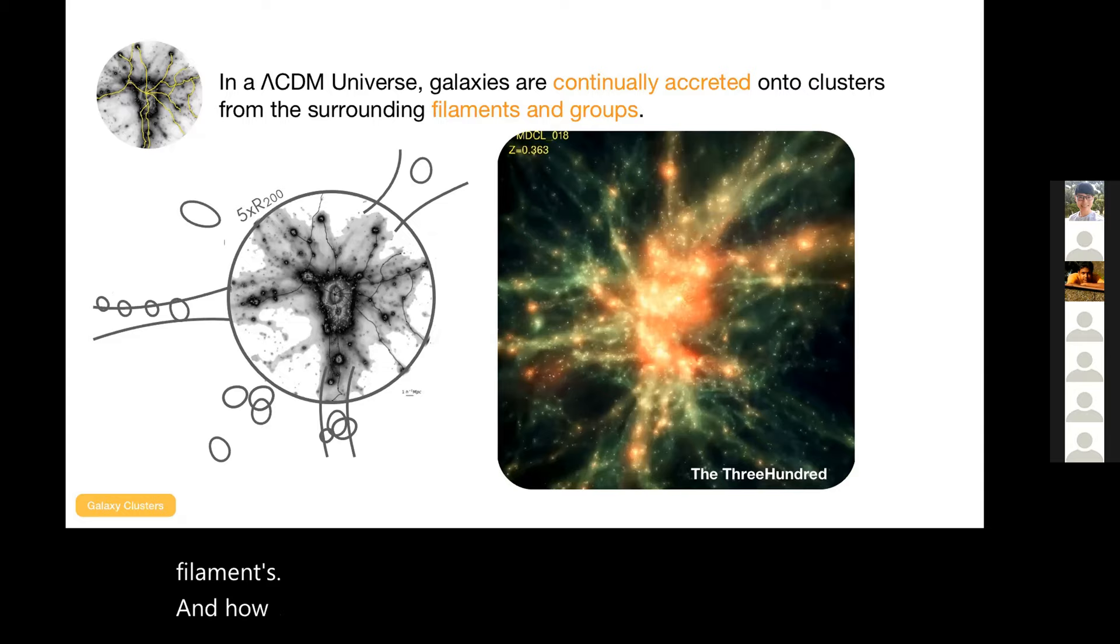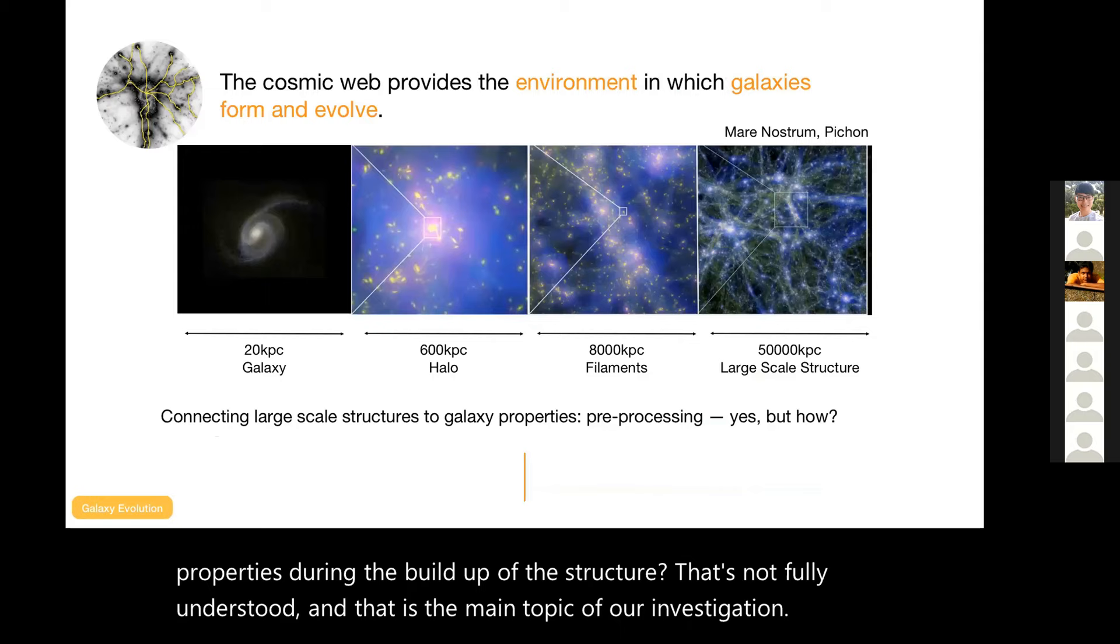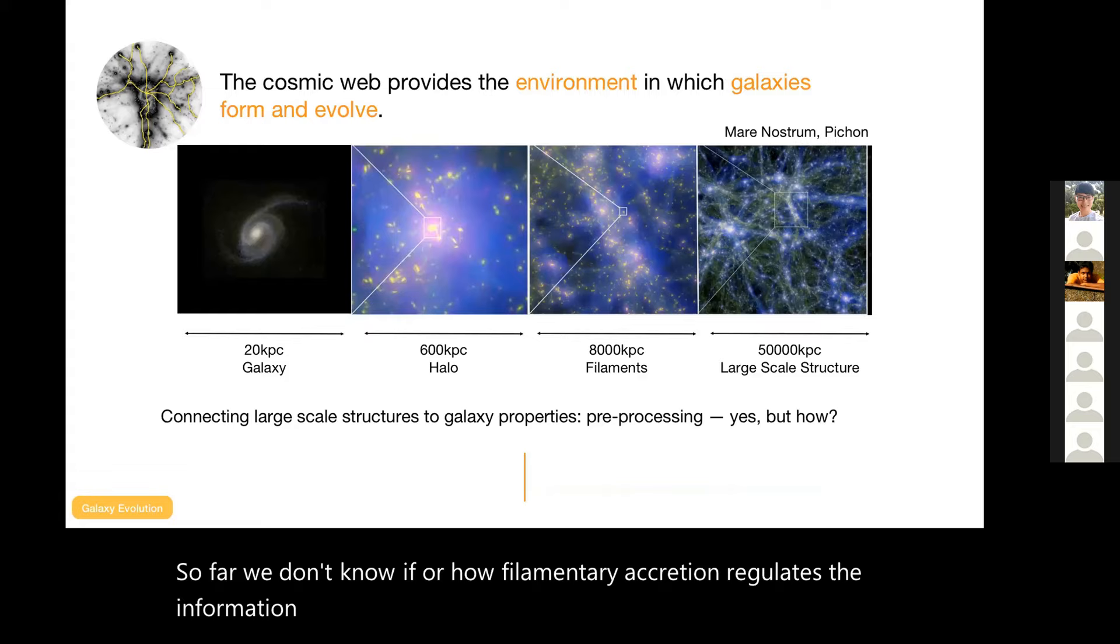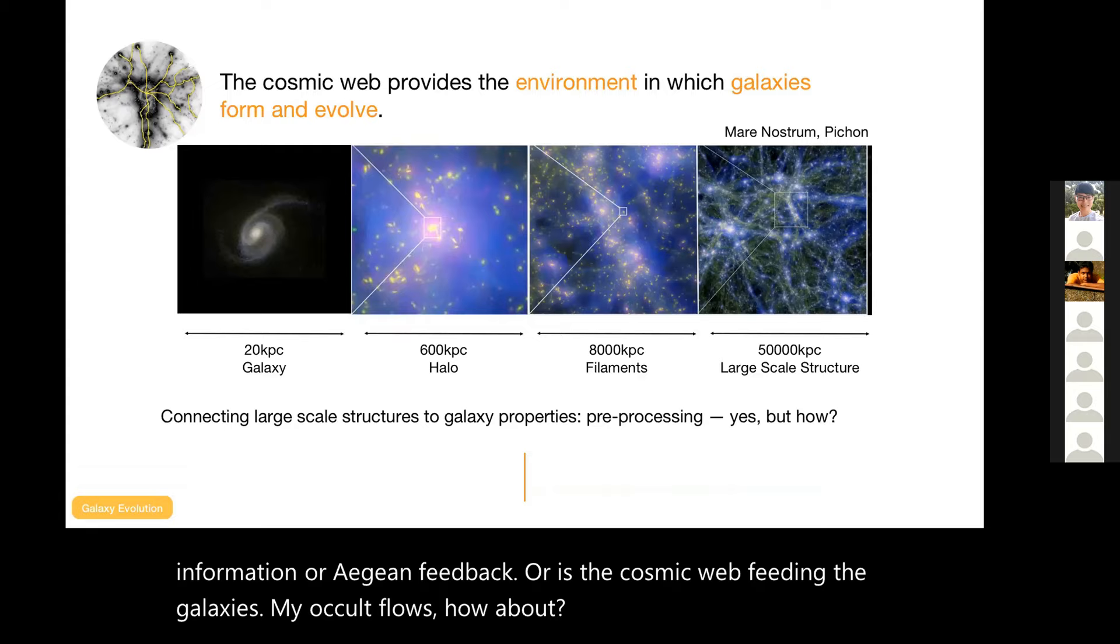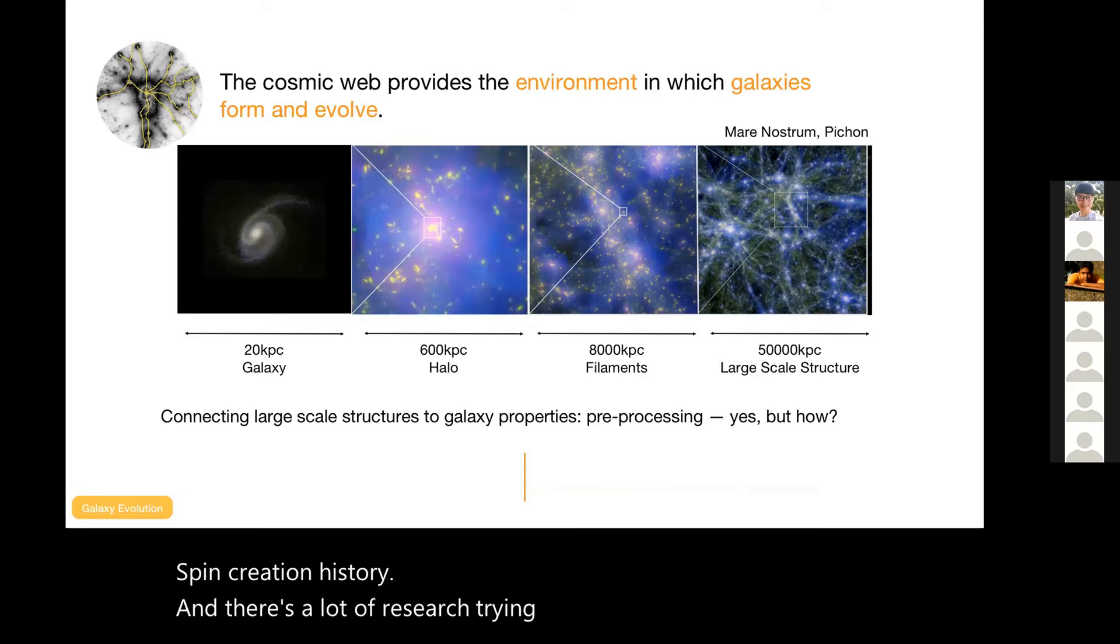How these different environments change the stellar and gas properties during the buildup of the structure, that's not fully understood, and that is the main topic of our investigation. So far we don't know if or how filamentary accretion regulates star formation or AGN feedback, or is the cosmic web feeding the galaxies via cold flows? How about spin, accretion history? And there's a lot of research trying to answer this question: is the cosmic web key in galaxy evolution?